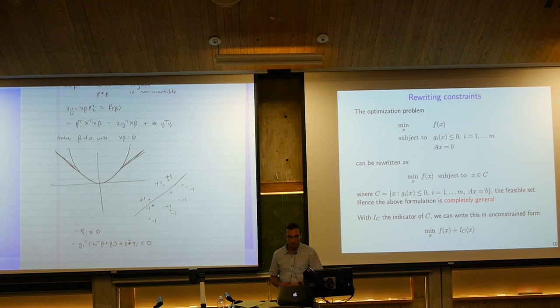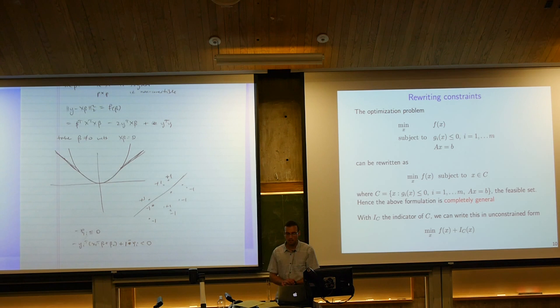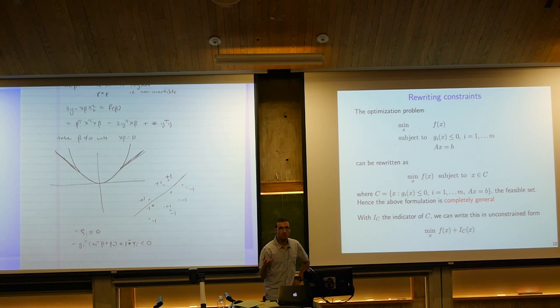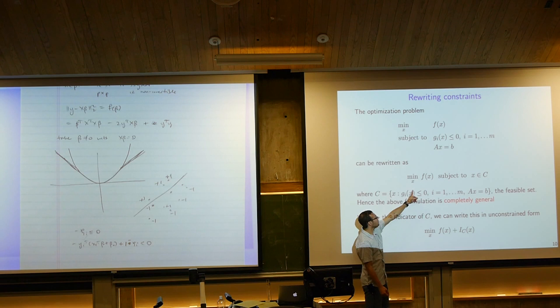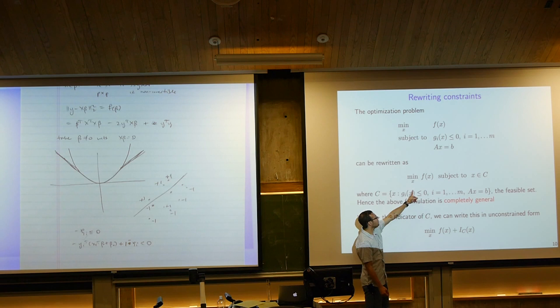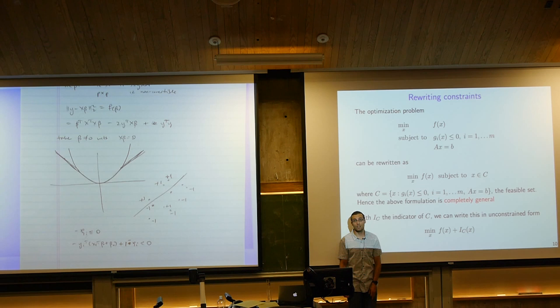Going one step further, we can write x ∈ C in terms of an indicator function: define I_C(x) = 0 when x ∈ C and ∞ when x ∉ C. We saw last time that when C is convex, this is a convex function. If gᵢ is convex, the sublevel set {x : gᵢ(x) ≤ 0} is convex — that's a sublevel set of a convex function. Requiring this for all i gives an intersection of convex sets.